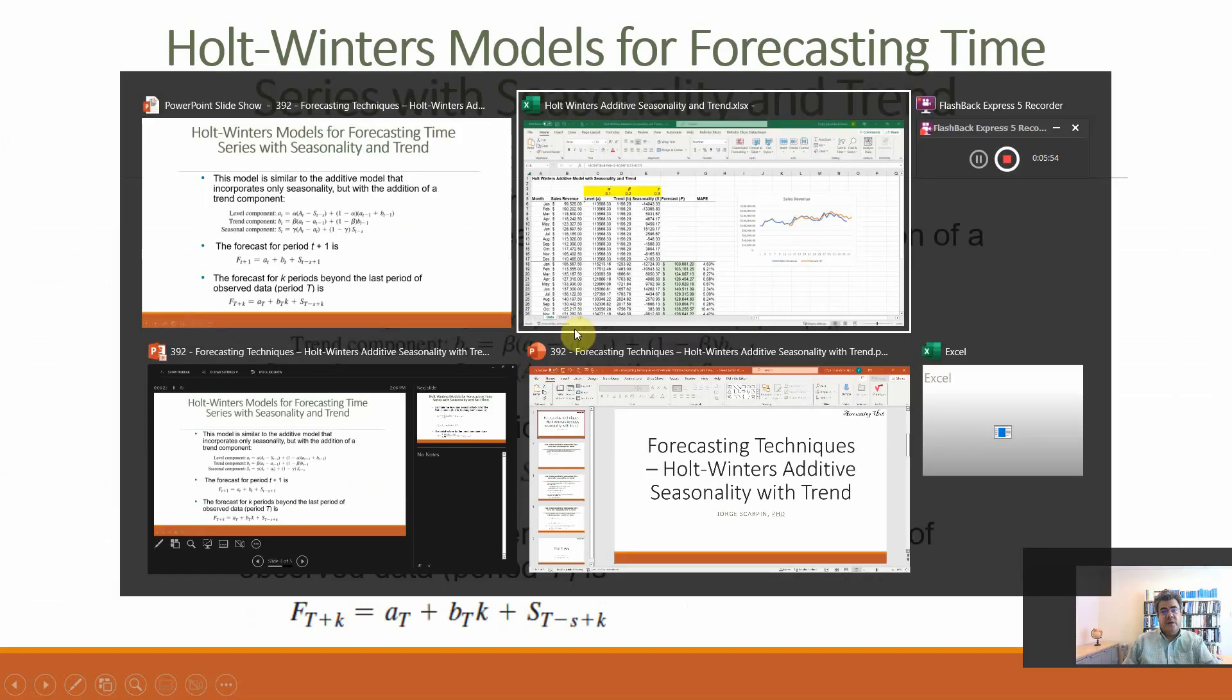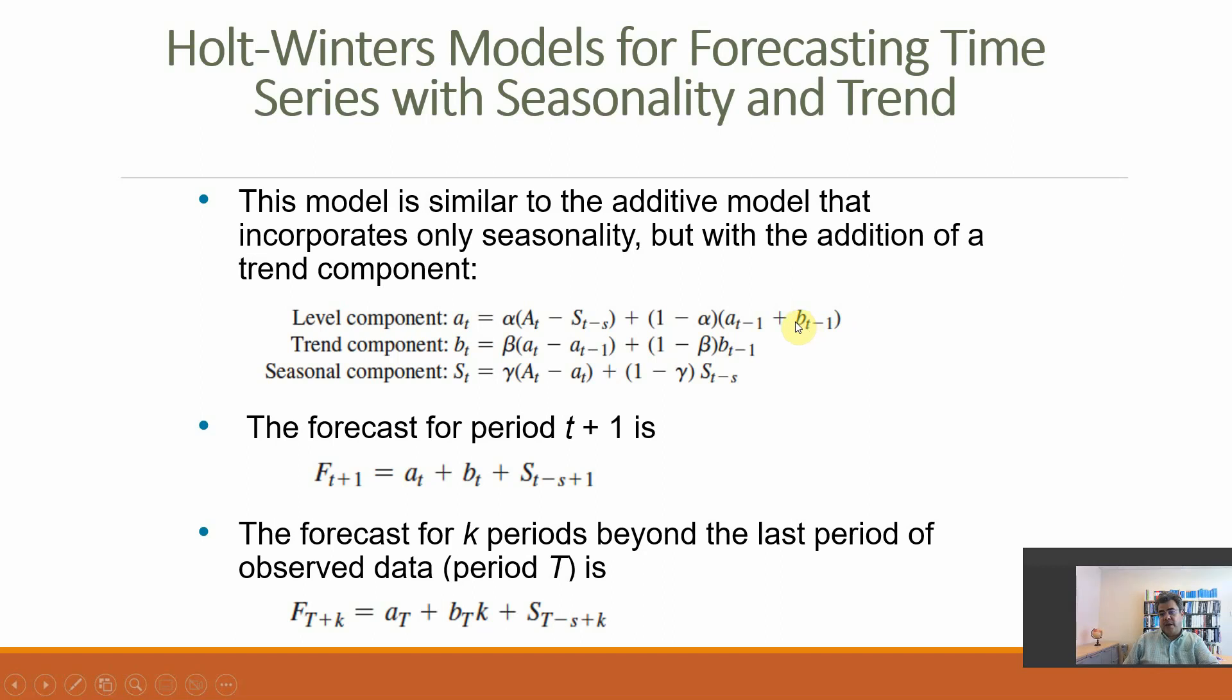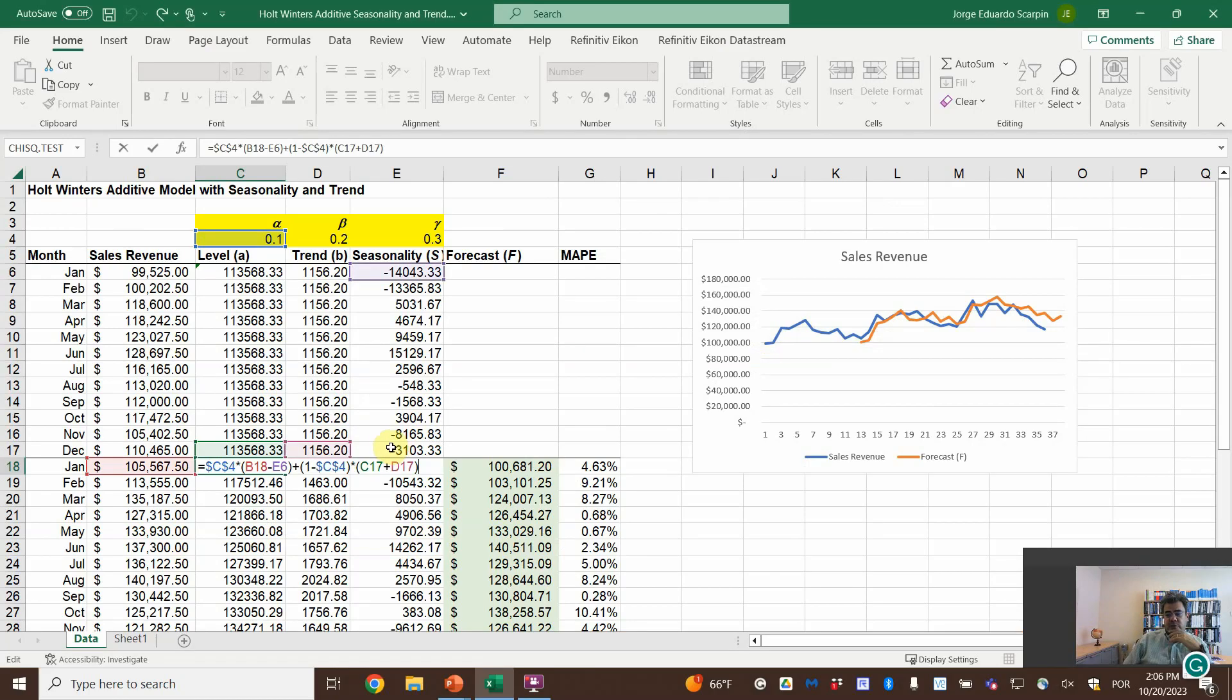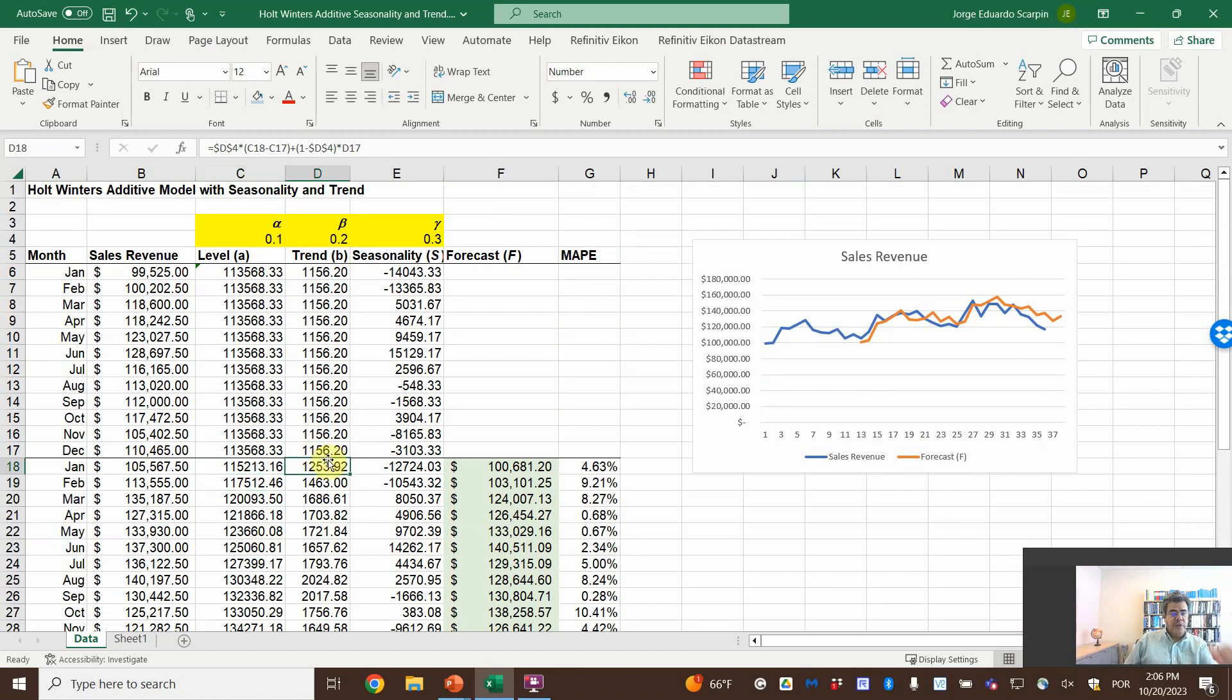So let's go to the level component. So alpha times actual number minus the seasonality, so minus the previous January, plus 1 minus alpha, times the previous alpha, plus the trend. So plus trend. So that is what we have here. So previous alpha plus the previous trend. And then, dollar sign before the level, we can copy and paste this formula to the two remaining years.